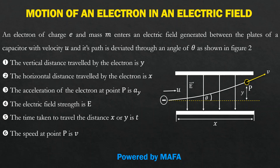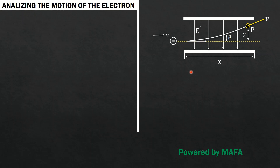Let's get started. According to our diagram, the electron enters the electric field with speed u. When it enters with speed u, it is deviated by angle theta. Motion occurs in two directions — horizontal and vertical — which is why we find both the horizontal and vertical distances covered. The initial horizontal velocity is u_x = u, and the initial vertical velocity u_y = 0, because the particle was launched with initial velocity u in the horizontal direction.